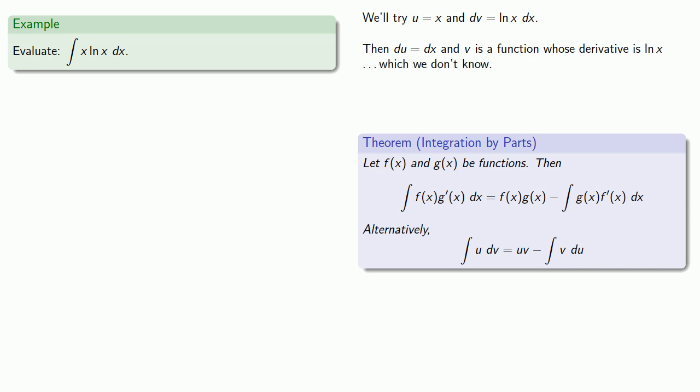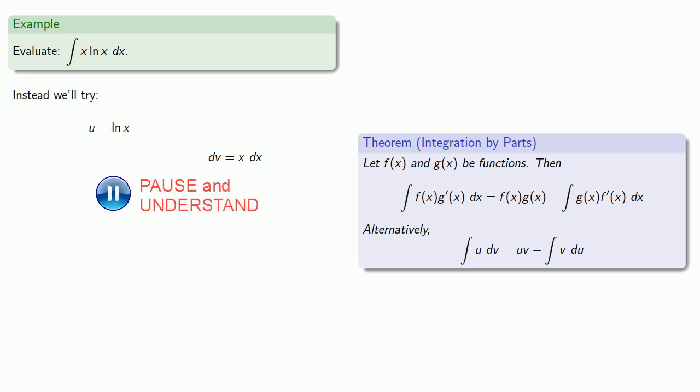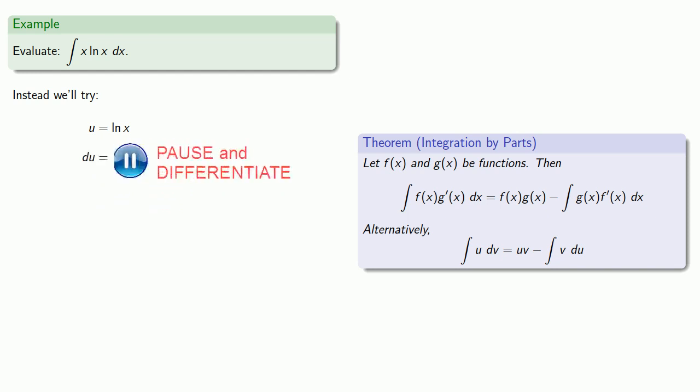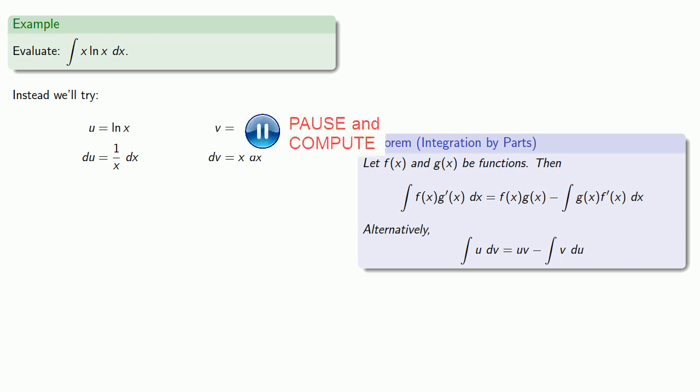So let's try a different choice. This time, let u = log x, and dv has to be whatever's left over: x dx. We need the derivative du = (1/x) dx, and we need the antiderivative of x dx, which is v = (1/2)x². Since we can find both of them, it's possible to proceed.